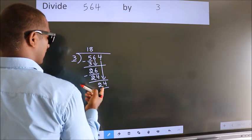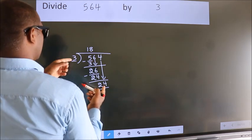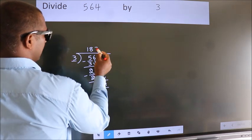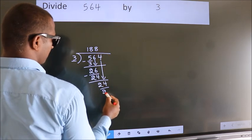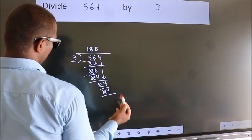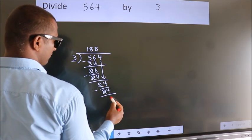In 3 table, 3 8s 24. Now, we subtract. We get 0.